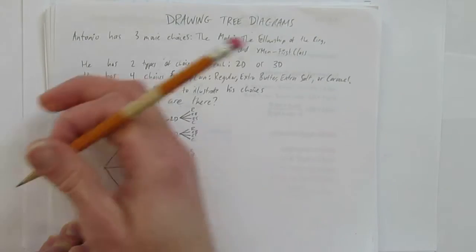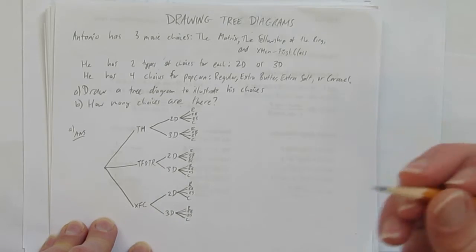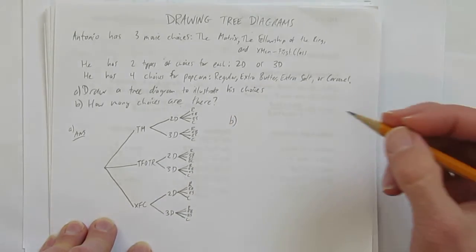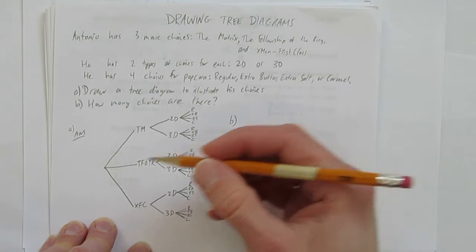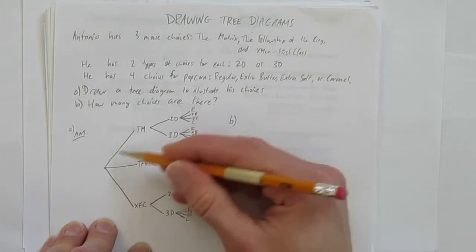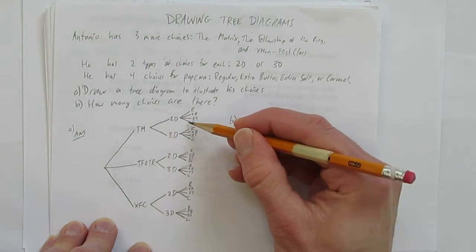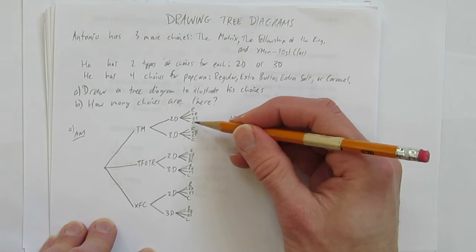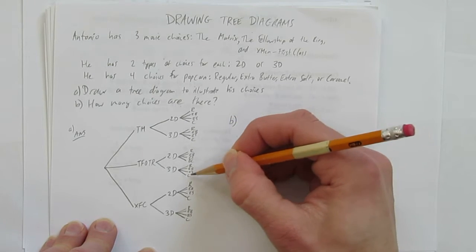The good thing about a tree diagram is it helps you solve questions. But we're just looking at the most basic question you can ask. How many total paths are there? Well, you could count each path. But it's much simpler just to look at the last set of branches. And notice there are four choices six times.